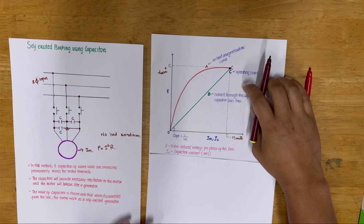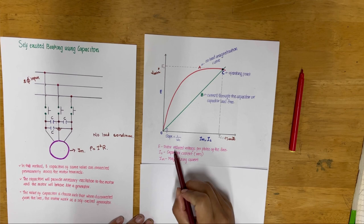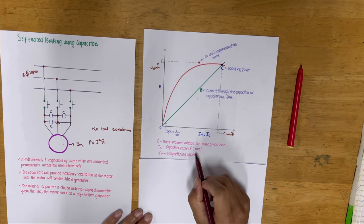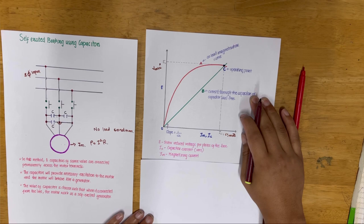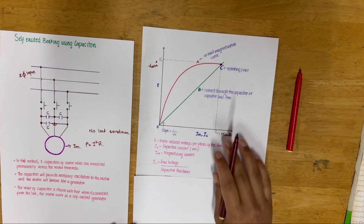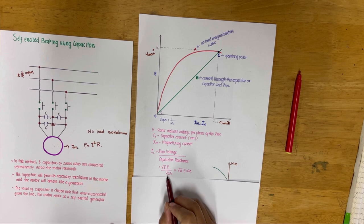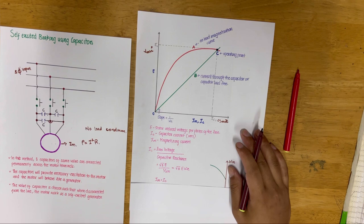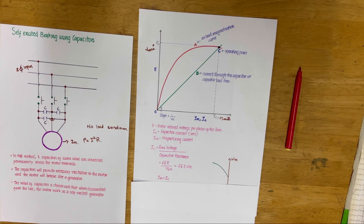Moving on to the three operations: let E be the stator induced voltage per phase. Then IC is the capacitor current in RMS, and IM is the magnetization current. The current through the capacitor is given by line voltage divided by capacitive reactance. Since the stator induced voltage gives line voltage as √3·E, we get IC = √3·E·ωC, and the magnetizing current IM equals IC.